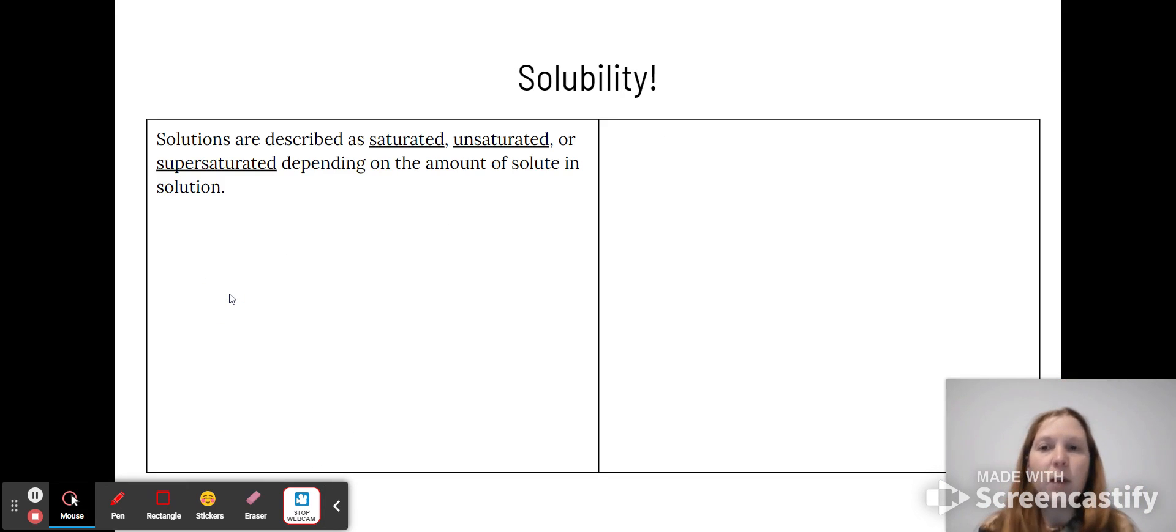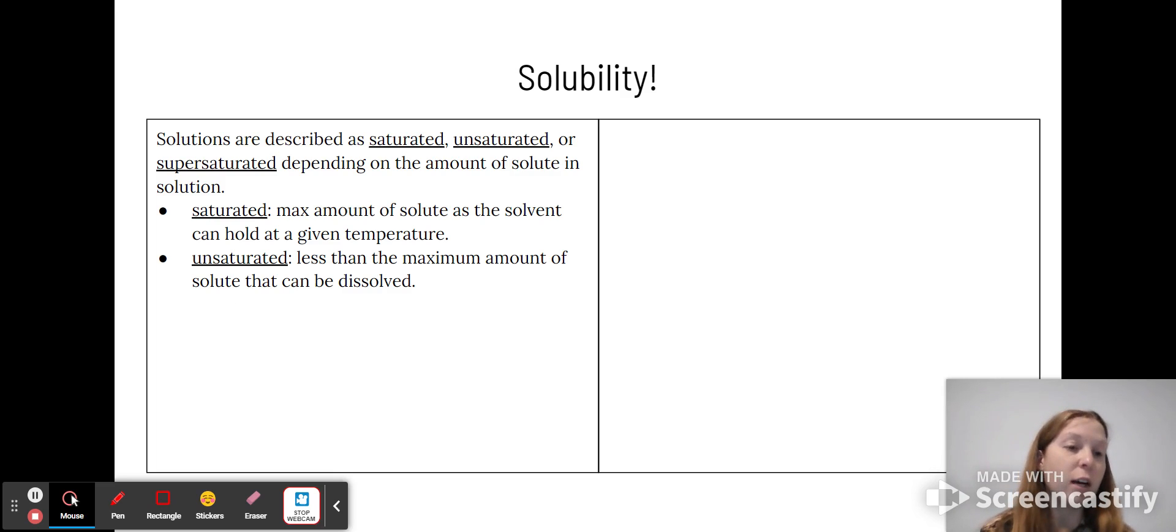Now let's talk about solubility and how you can describe a solution. You can use one of three terms: saturated, unsaturated, or supersaturated. Saturated means you have the max amount dissolved at that temperature in that amount of solvent. Unsaturated means you have less than the maximum amount. Supersaturated means you have more than you thought you could dissolve at that temperature in that amount of solvent.